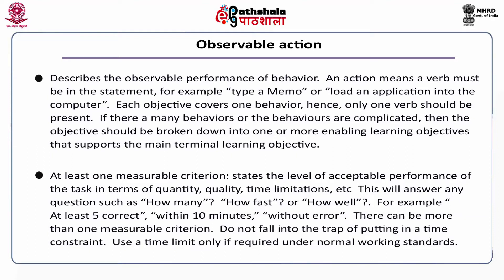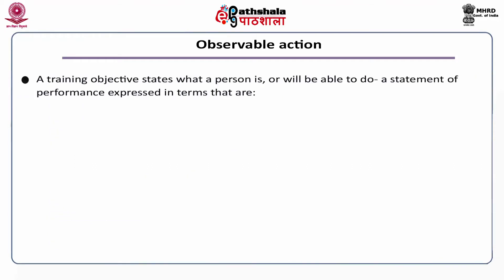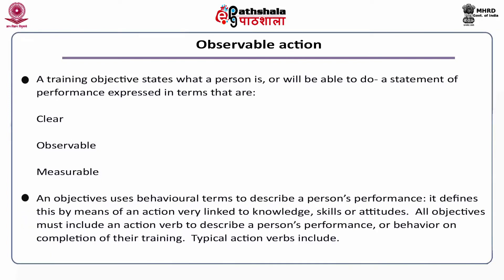This will answer questions such as how many, how fast, how well — for example, at least five correct within 10 minutes without an error. There can be more than one measurable criteria. Do not fall into the trap of putting in a time constraint; use a time limit only if required under normal working standards. A training objective states what a person will be able to do — a statement of performance expressed in terms that are clear, observable and measurable. An objective uses behavioral terms to describe a person's performance, defining this by means of an action verb linked to knowledge, skills or attitude. All objectives must include an action verb to describe a person's performance or behavior on completion of their training.